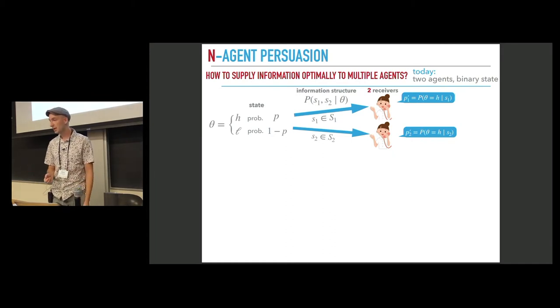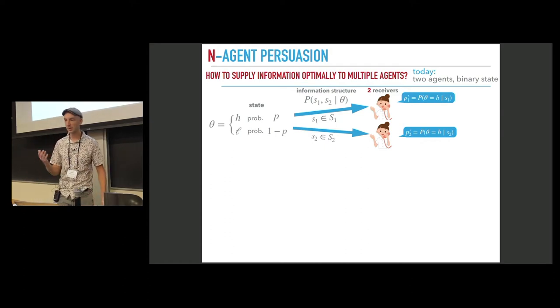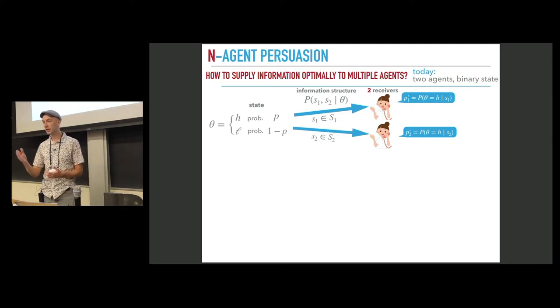The first receiver computes her posterior belief P1 prime, which is just the conditional probability of a high state given her signal S1. For the second receiver, perhaps she ends up with another posterior belief because she conditions on her signal S2.